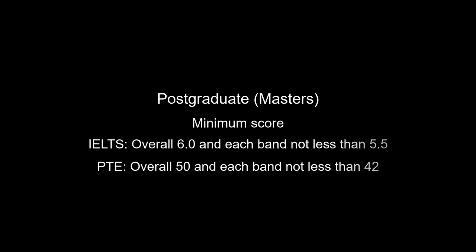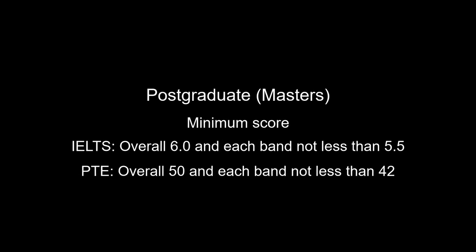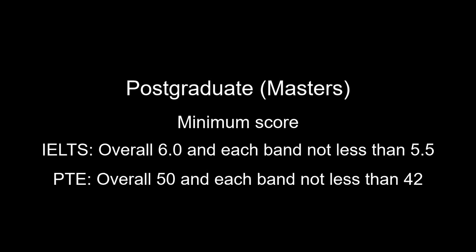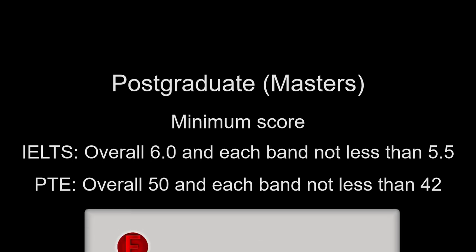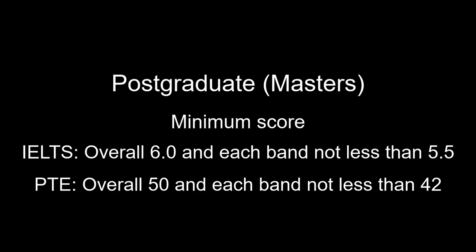For a postgraduate or master's degree course, the minimum overall score requirement is 6 in IELTS with each band not less than 5.5. In PTE, you need an overall score of 50 with each band not less than 42. Most of the universities require you to score higher than these minimum scores.